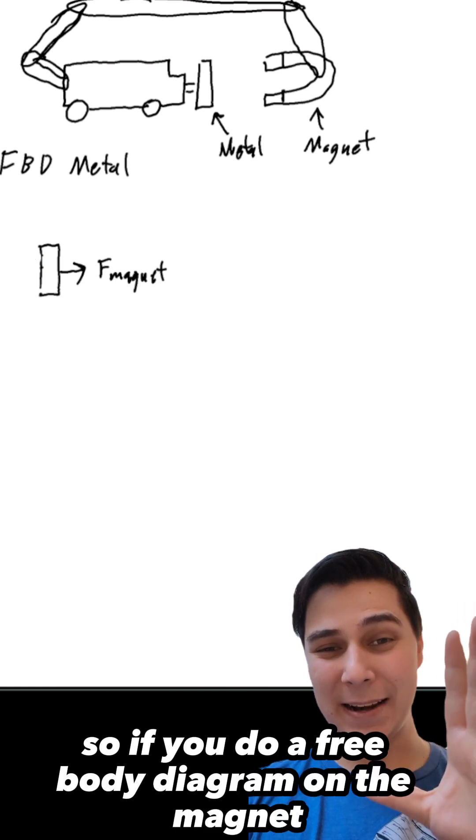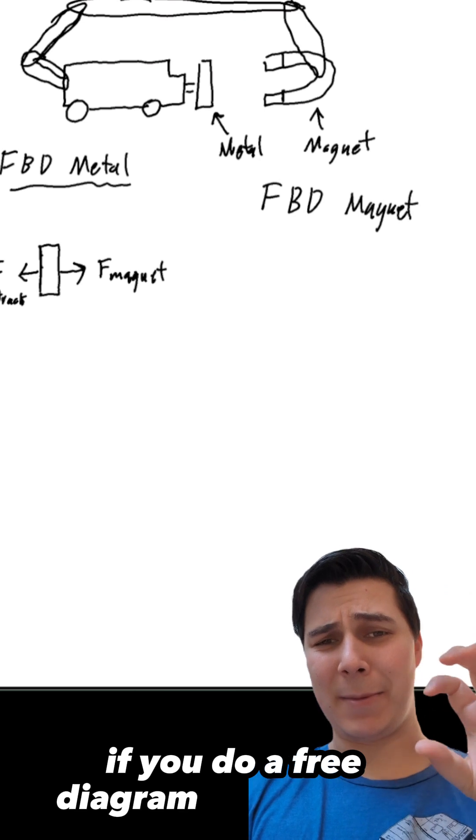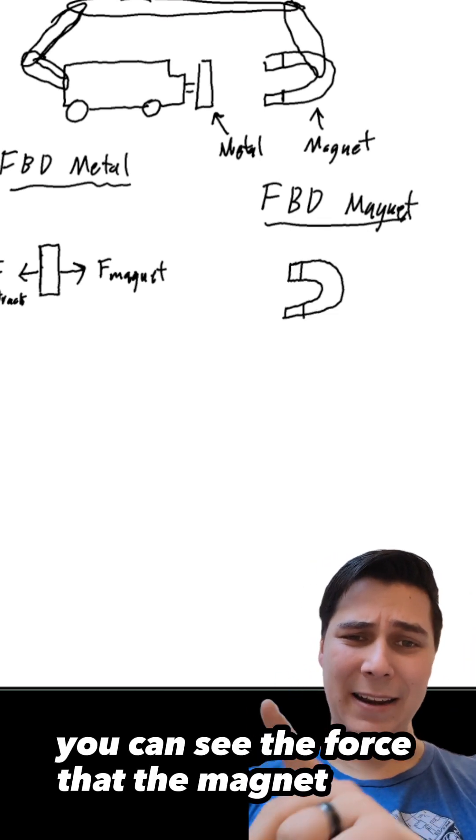So if you do a free body diagram on the magnet, you could show the force that the metal puts on the magnet. If you do a free body diagram on the metal, you could see the force that the magnet puts on the metal.